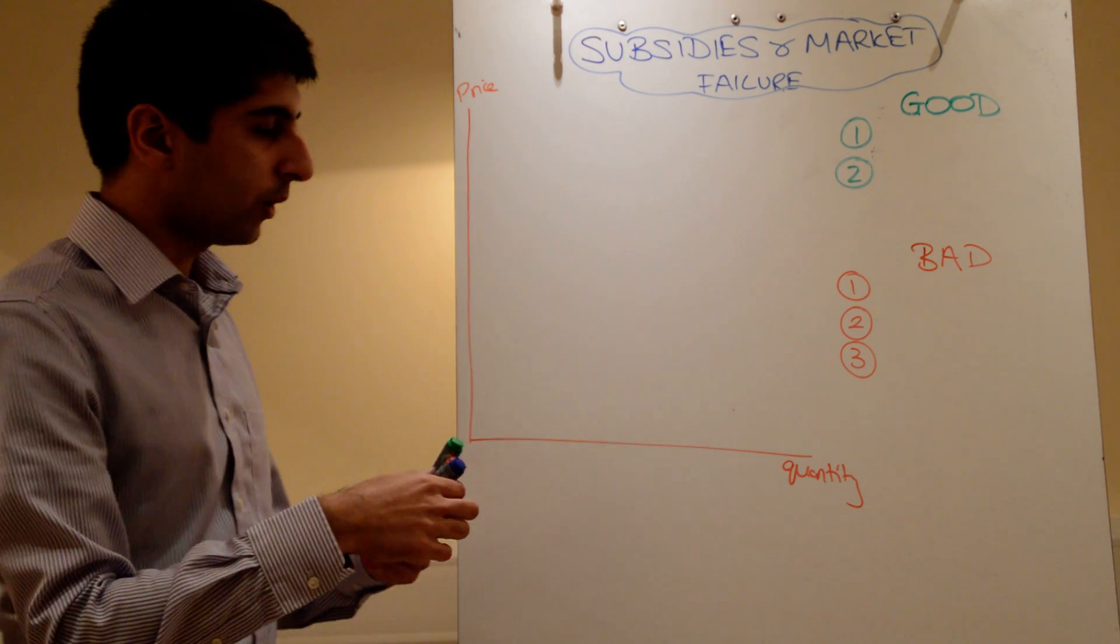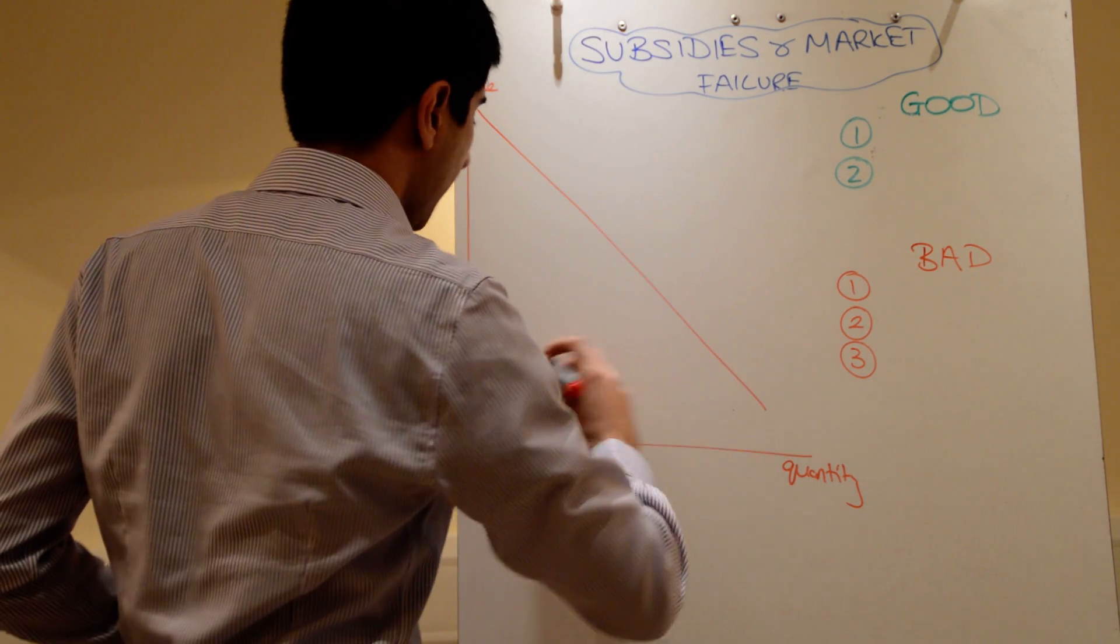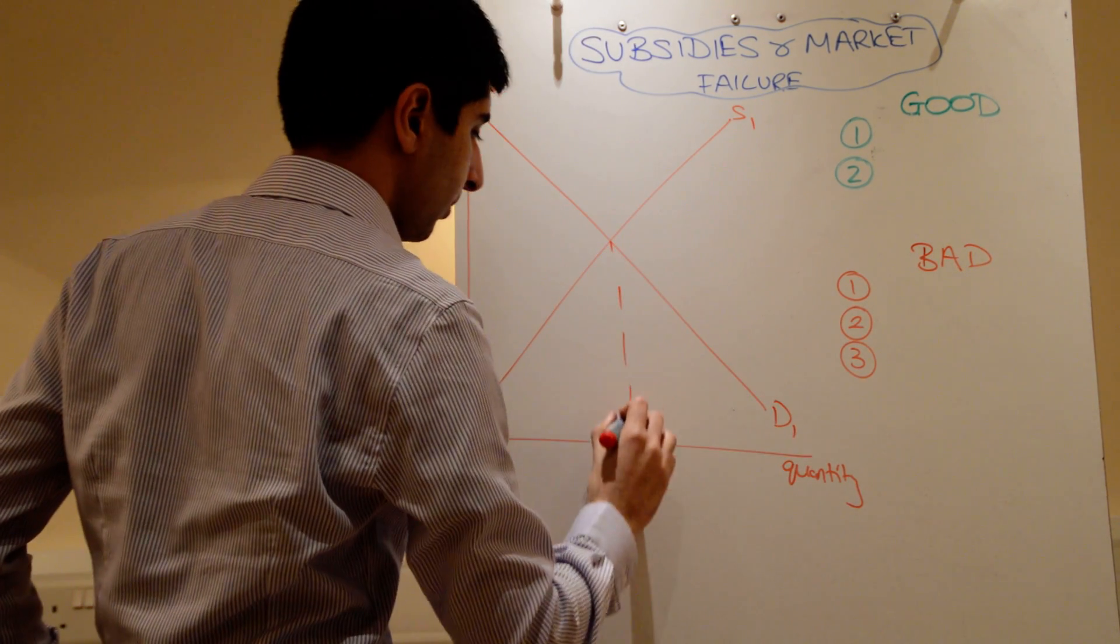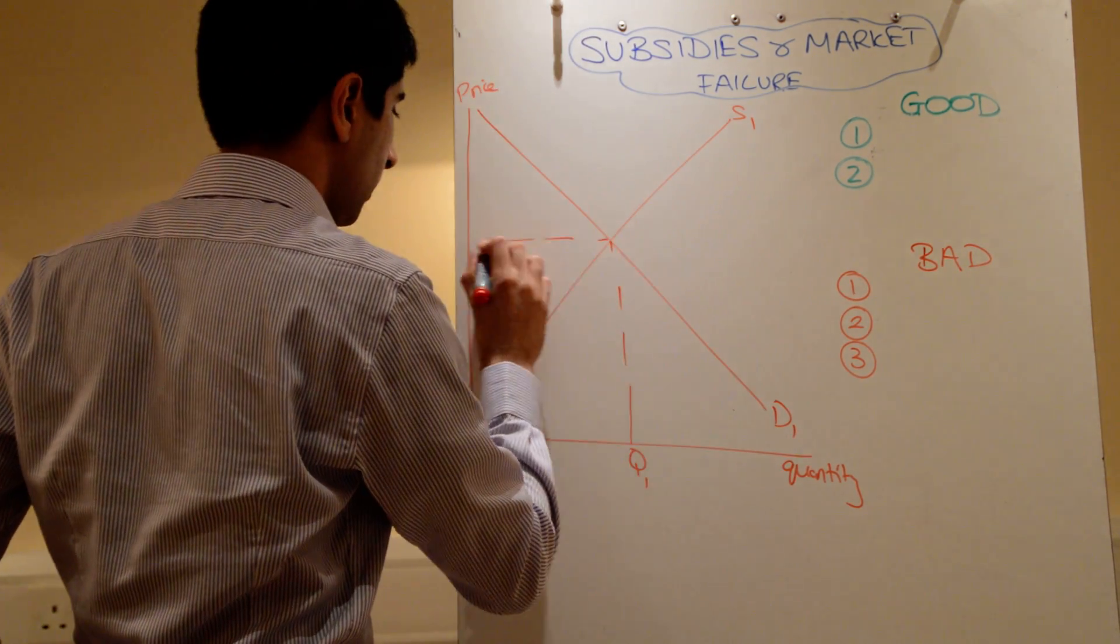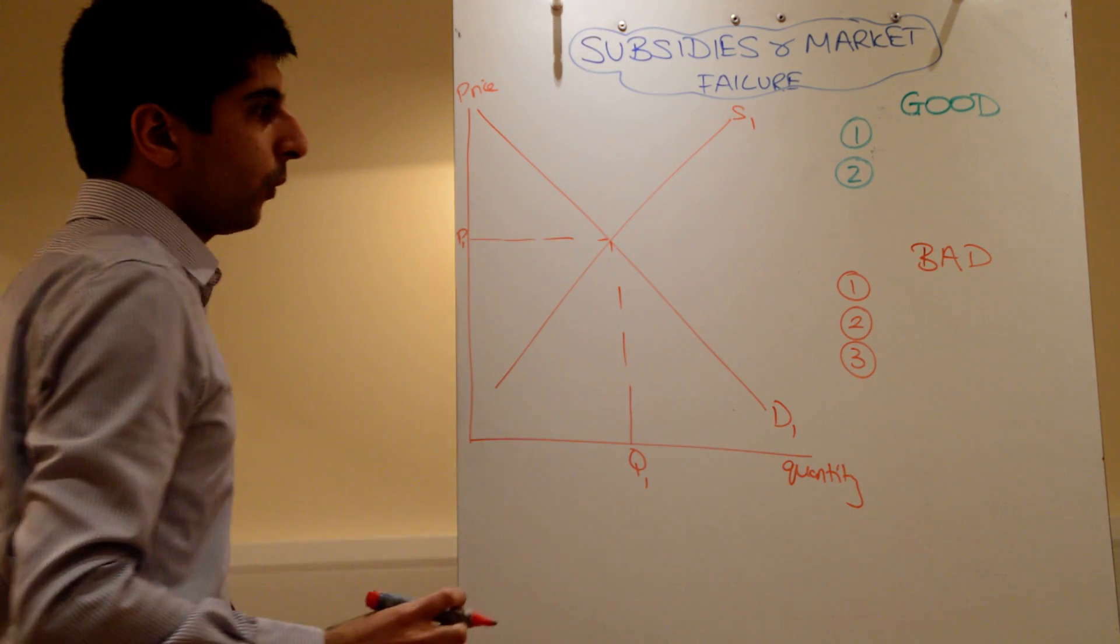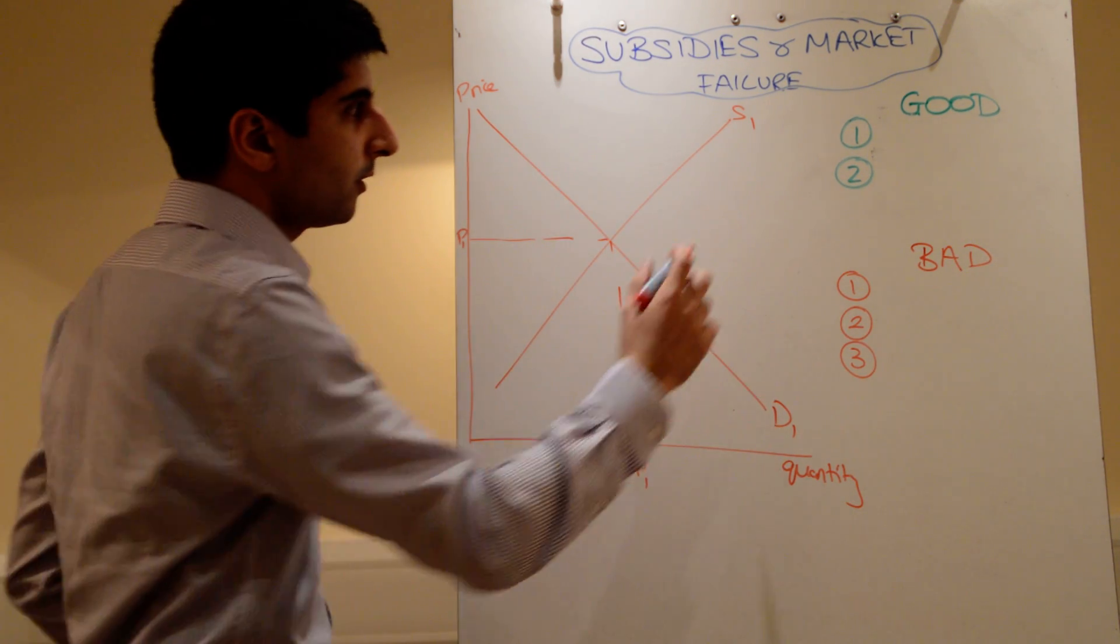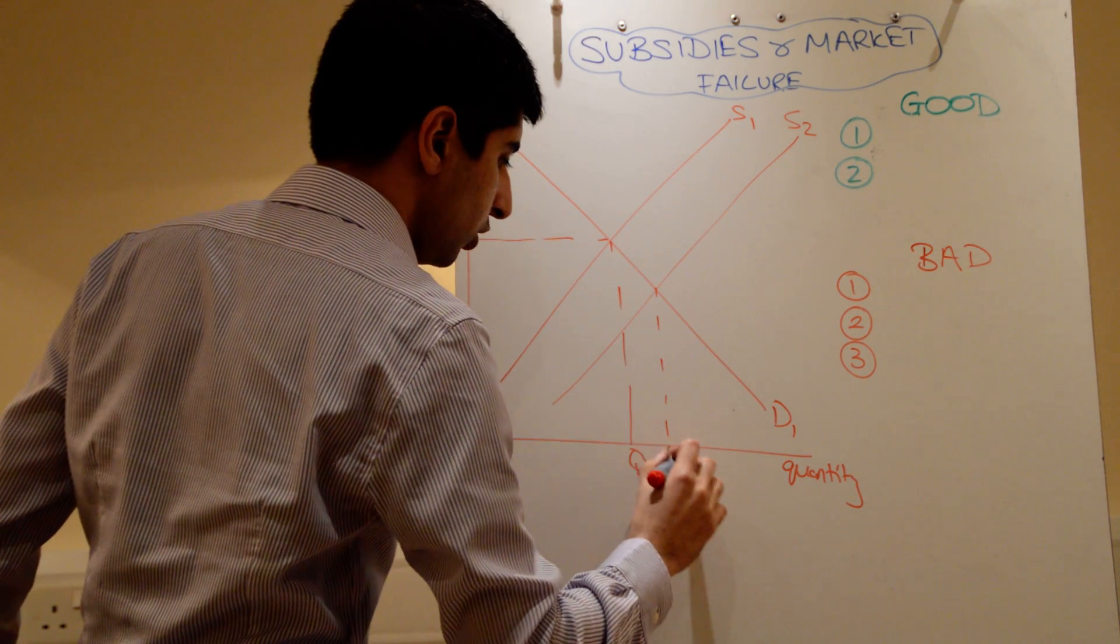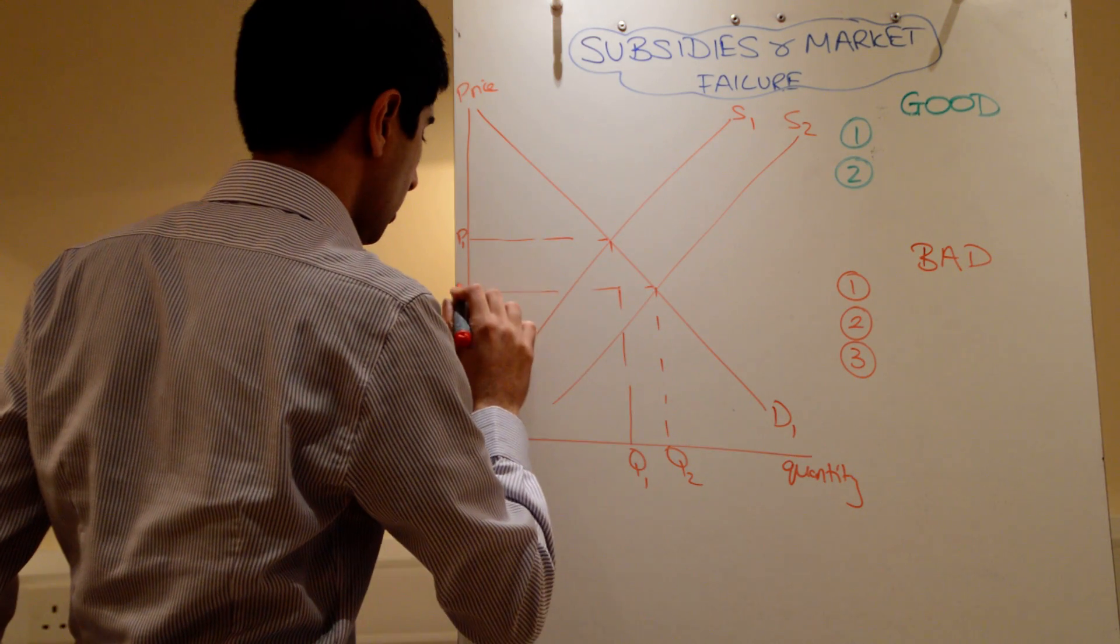How does that work on a diagram? Very basic demand and supply diagram going on here, with initial equilibrium at P1 and Q1. Well, through the implementation of the subsidy, the supply curve will shift downwards. We'll introduce a new equilibrium at P2 and Q2.